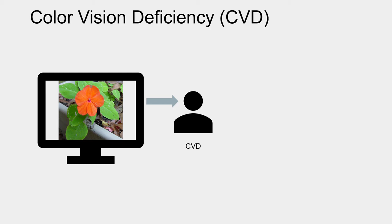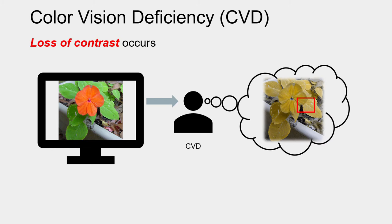People with normal vision can distinguish the red flower from the green leaves. However, people with color vision deficiency may perceive the image like this. They may have difficulty in distinguishing the flower from the leaves, because CVD causes loss of contrast.